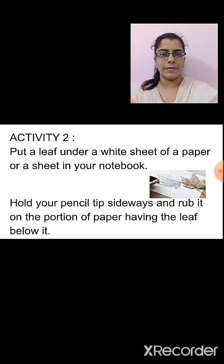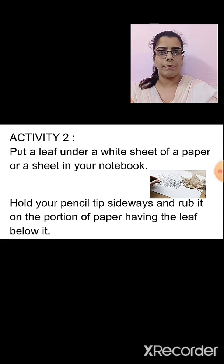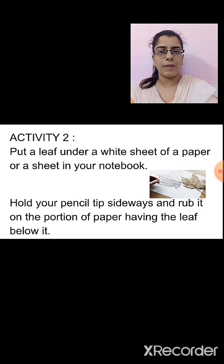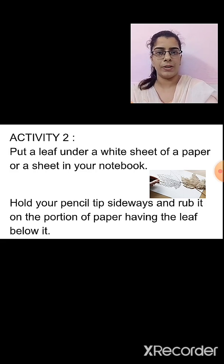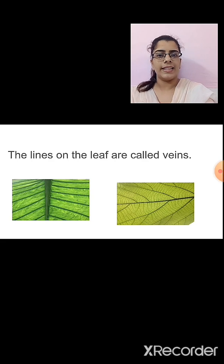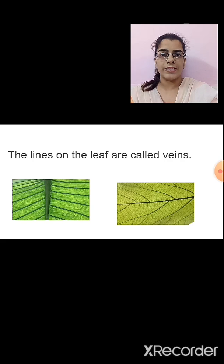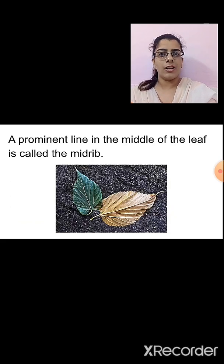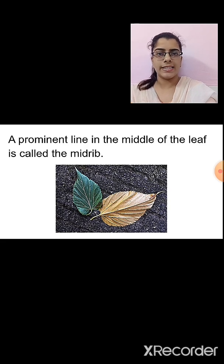Now we will perform an activity to study the different parts of the leaf. Put a leaf under a white sheet of paper or in your notebook. Hold your pencil tip sideways and rub it on the portion of the paper having the leaf below it — just trace the leaf on the paper. You will see lines on the leaf; these lines are called veins. In the middle of the leaf, a prominent line is visible — that line is called the midrib. A prominent line in the middle of the leaf is called the midrib.